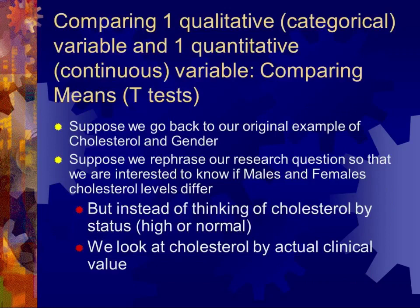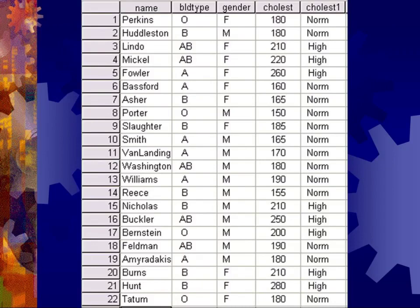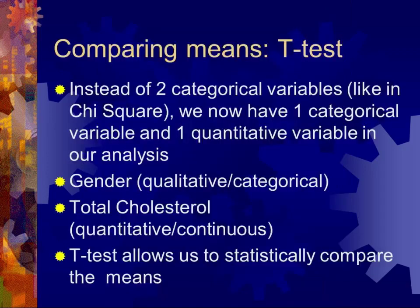The second area we looked at last time was t-tests. Suppose we go back to our original data with both males and females, but now look at the cholesterol level not as a categorical variable of normal or high, but rather as an actual continuous variable with the numeric cholesterol value in column 4. When comparing a categorical variable with a quantitative or numeric value, we use a t-test for that kind of assessment.